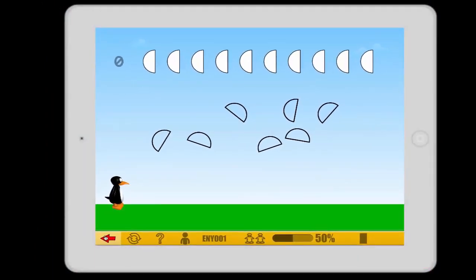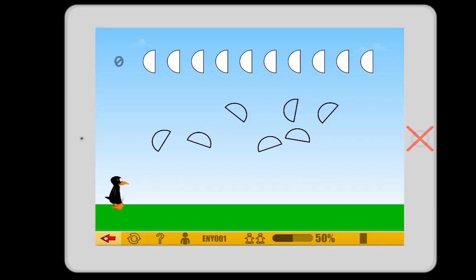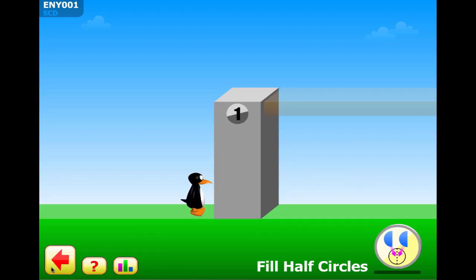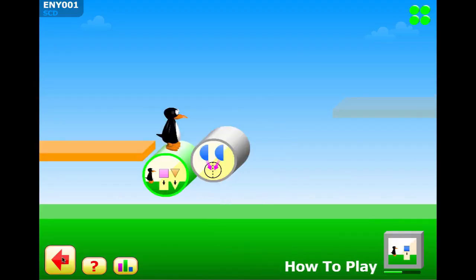Students using tablets will be tempted to click the home button at the conclusion of the session, but this will not allow their progress to be saved. To log off properly in ST Math, students need to click the red arrows in the bottom left side of the screen.